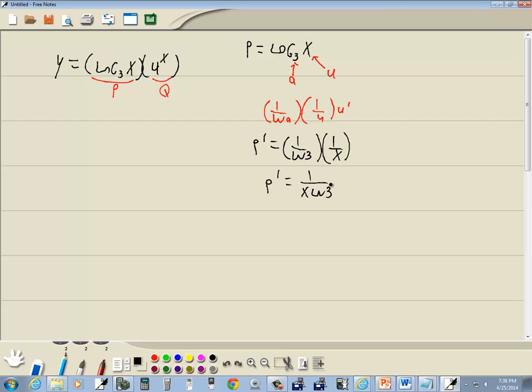Well, we need Q prime. Q is 4 to the x, and again I'm gonna use the longer version of the formula for this. This is a to a power, specifically a to the u power, and our formula for the derivative will be the natural log of a times a to the u times u prime. So a is 4, so we're gonna have natural log of 4, a to the u which is just 4 to the x times u prime. Well the derivative of x is 1, so that just drops away.